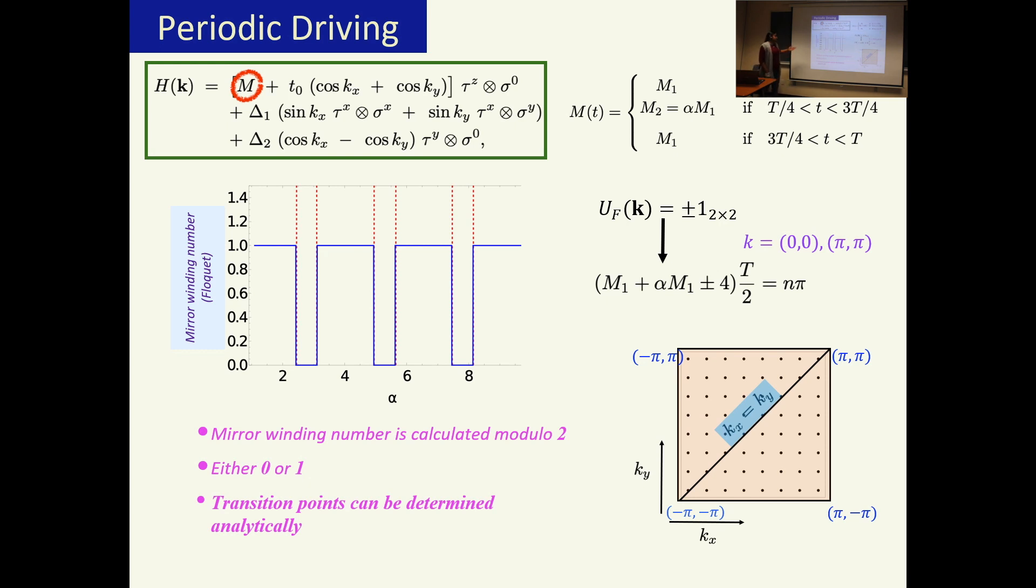This is how it looks like as a function of the ratio of the two mass amplitudes. There are three things which we see here. The mirror winding number is calculated modulo 2 and it is either 0 or 1. The second thing that we see is that these transition points can be determined analytically and they are determined by studying where this time evolution operator becomes identity along the diagonal.